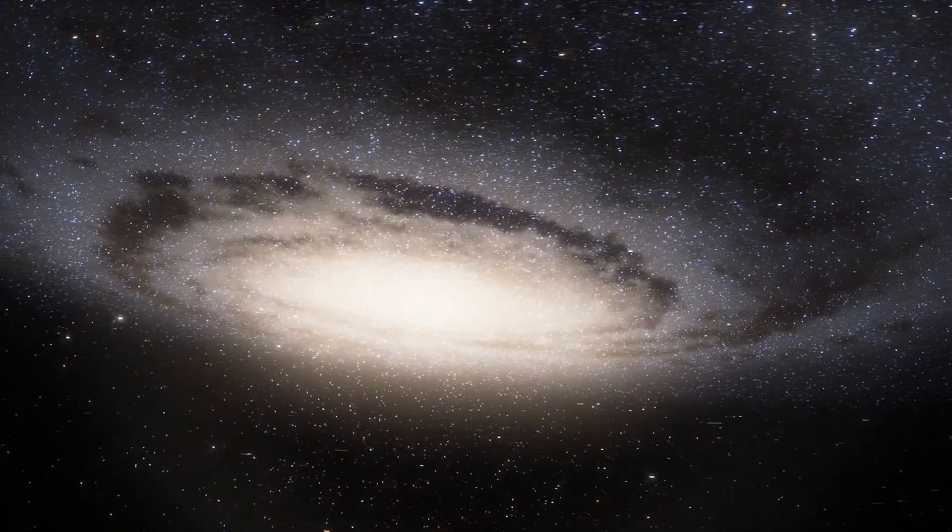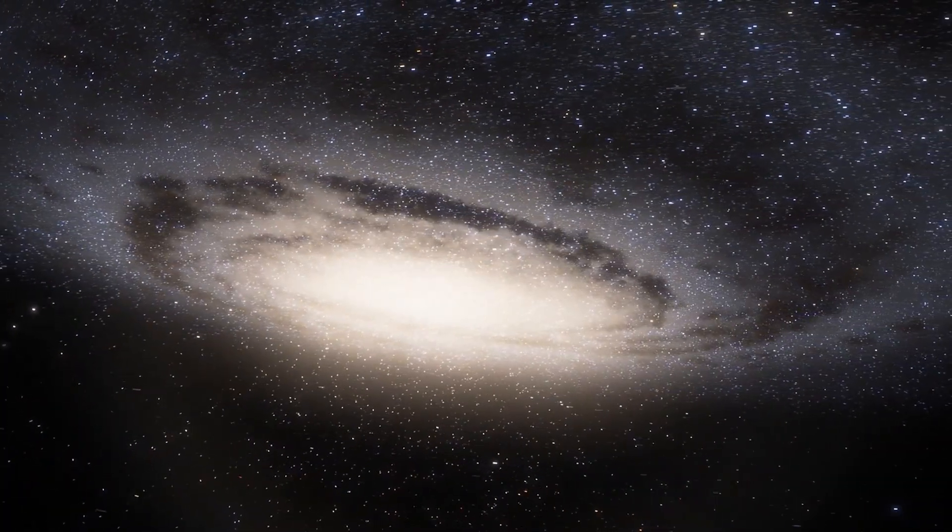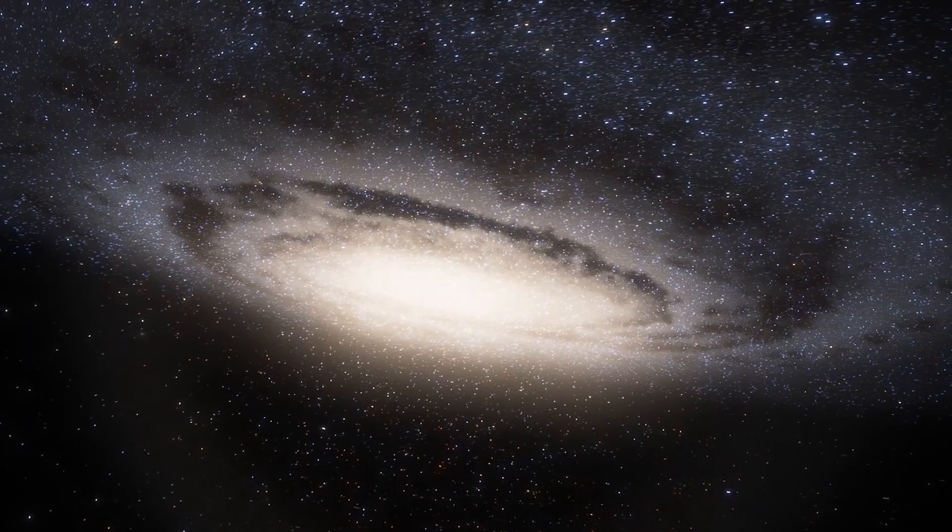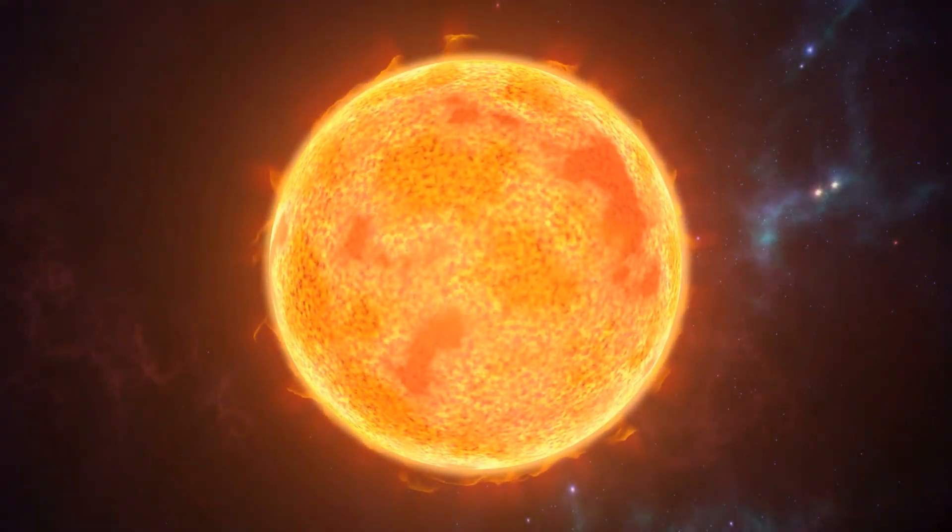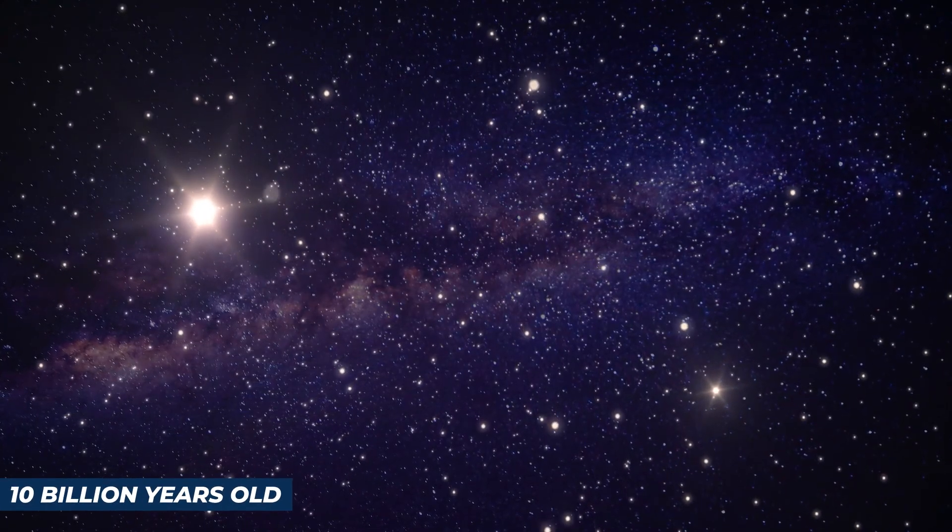Andromeda is a colossal cosmic structure, estimated to have a mass between one and two trillion times that of our Sun. It is relatively close to us in the vastness of space, and its age is believed to be around 10 billion years old.